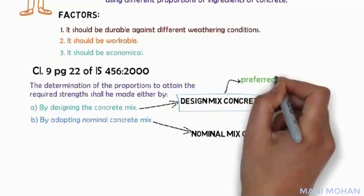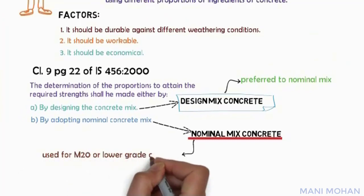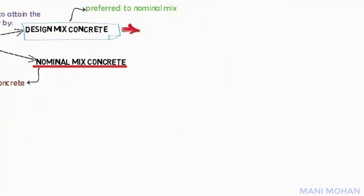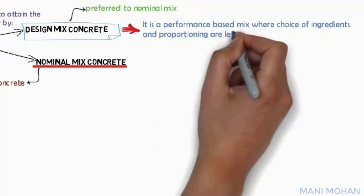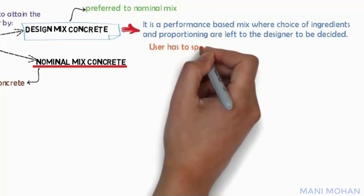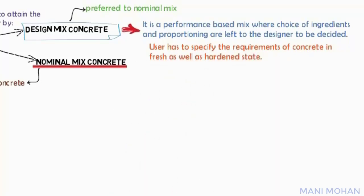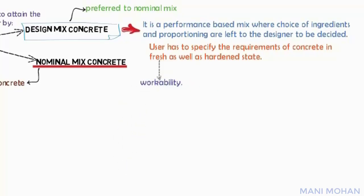Design mix concrete is preferred to nominal mix. Nominal mix may be used for M20 or lower grade concrete; however, this mix is likely to involve a higher cement content. Design mix is a performance-based mix where the choice of ingredients and proportioning are left to the designer. The user specifies only the requirements in fresh and hardened states — workability in fresh concrete, and compressive strength and durability in hardened concrete.